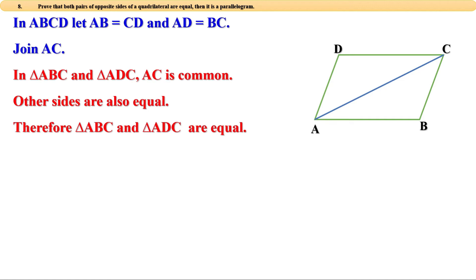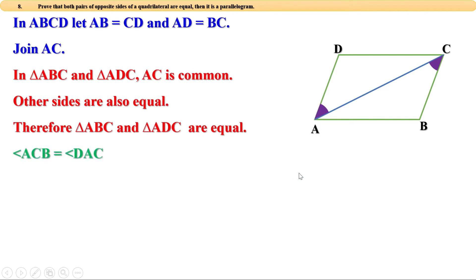When two triangles are congruent, the angles opposite to equal sides are equal. Here AB and CD are equal. The angle opposite to AB and the angle opposite to CD are equal. These two angles are the alternate angles formed when sides AD and BC are intersected by AC.